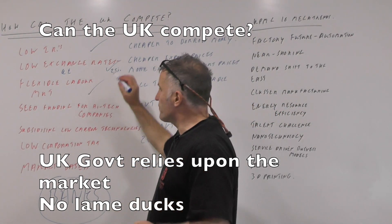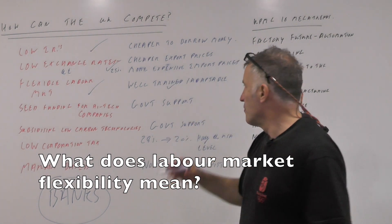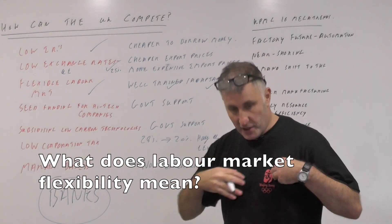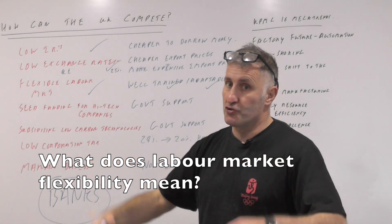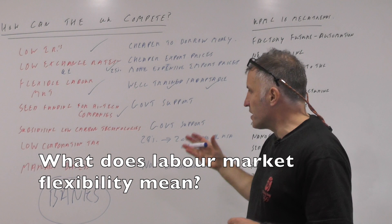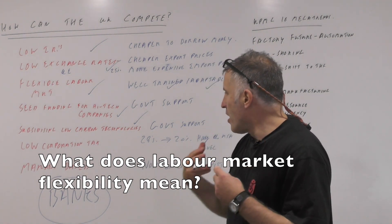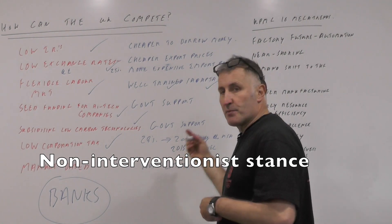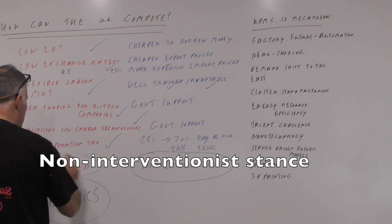The UK's biggest advantage is probably its flexible labour market, which developed in the 1980s — a well-trained workforce willing to adapt and move, a big advantage compared to Western Europe. The government has provided seed funding for high-tech companies, subsidised low-carbon technologies, and decreased corporation tax from 28% down to 20% by 2015, which is nearly half the American rate. Overall, the government has taken a market-based, non-interventionist approach towards British manufacturing.